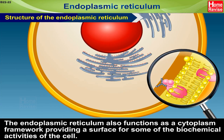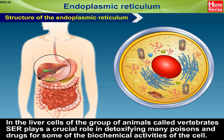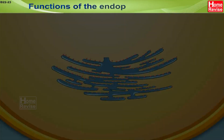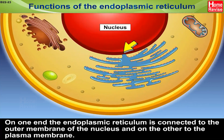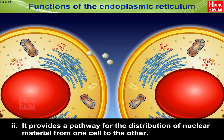The endoplasmic reticulum also functions as a cytoplasmic framework, providing a surface for some of the biochemical activities of the cell. In the liver cells of vertebrates, SER plays a crucial role in detoxifying many poisons and drugs. The endoplasmic reticulum is connected on one end to the outer membrane of the nucleus and on the other to the plasma membrane. First, it forms the supporting skeletal framework of the cell. Second, it provides a pathway for the distribution of nuclear material from one cell to the other.